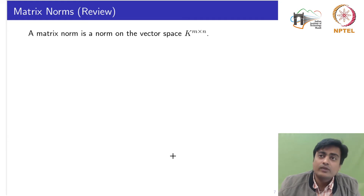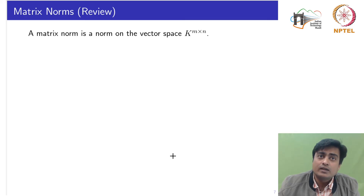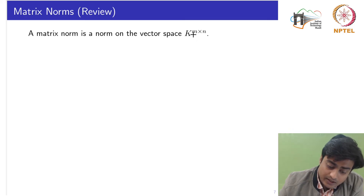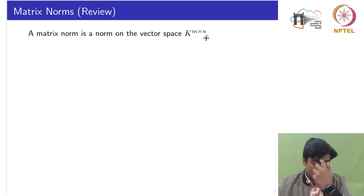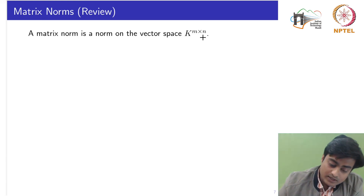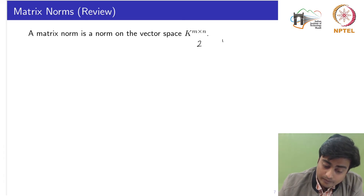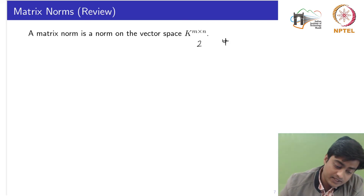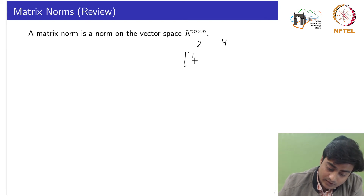Proceeding further, we will introduce a brief review of matrix norms, vector norms, and positive and negative definite matrices. A matrix norm is a norm on the vector space k of dimension m cross n. First, you should understand why we need a norm of a matrix or a vector — it is for comparison purposes. For scalar values, say 2 and 4, we know which is greater, but when we have vectors the comparison is not straightforward.